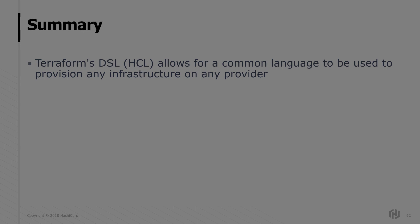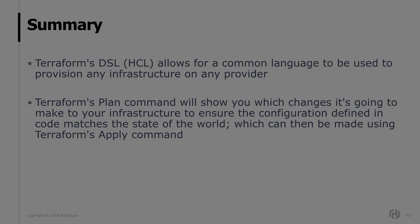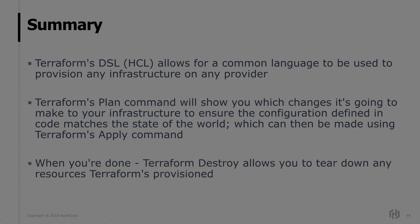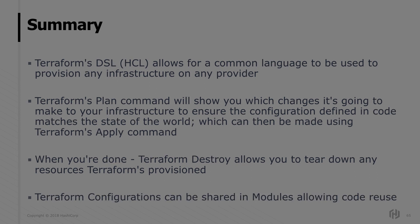To summarize: Terraform's DSL, HCL, allows you to use a common language to provision just about anything on any provider. Terraform plan works out what needs to be done to ensure the local configuration matches the state in Azure or whatever else. You make those changes with Terraform apply. When you're done, Terraform destroy tears things down. And you can reuse Terraform configurations as modules — from local file system, a Git repo, a module registry, or wherever else.